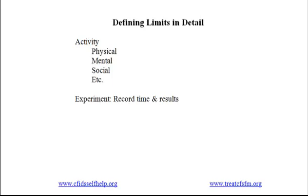By staying within your limits you can avoid a lot of suffering and post-exertional malaise. We're going to look at three types of activity: physical, mental, and social. But this will also apply to other aspects of living with CFS and FM, such as sleep and rest, physical sensitivities — sensitivity to and tolerance for light, noise, food, chemicals, weather — and limits on emotions and stress.